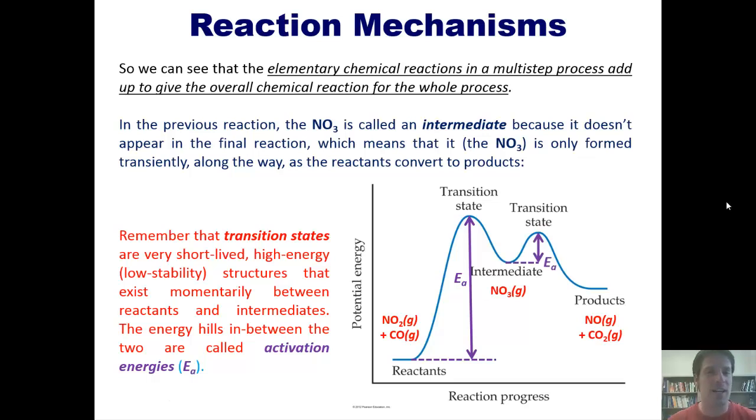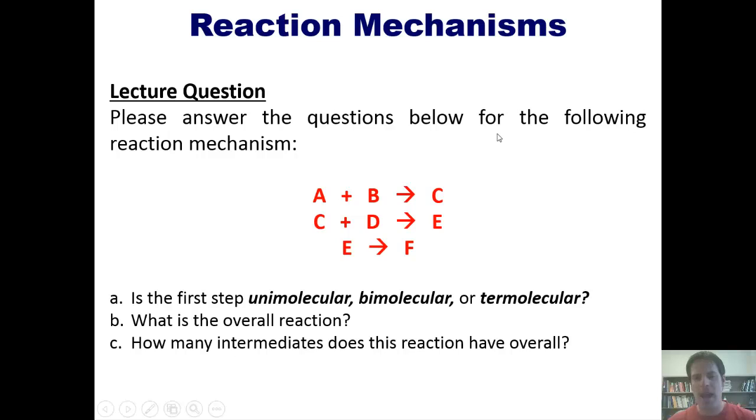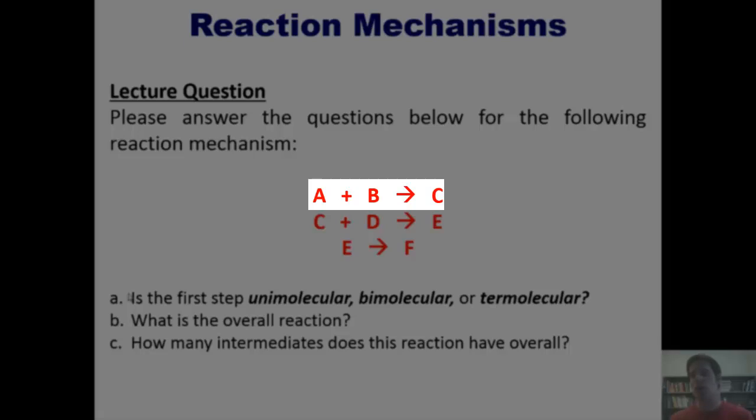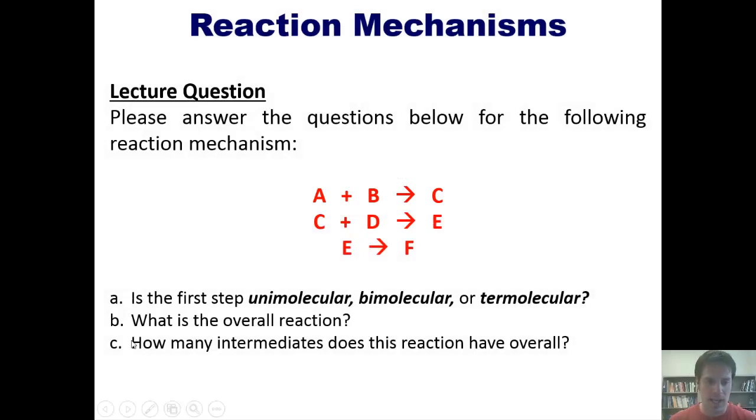This takes us to a glorious set of lecture questions. Let's imagine that each of these lines represents one elementary step in a three-step reaction mechanism. Now I'll ask you these questions. Question 1: Is the first step, shown here, unimolecular, bimolecular, or termolecular? Question 2: What is the overall reaction? And question 3: How many intermediates does this reaction have overall? Now, I'm not going to do this problem for you, but we'll let you refer back to what I talked about earlier in this video, and then attempt to do it on your own.